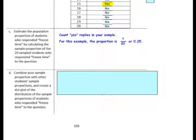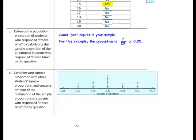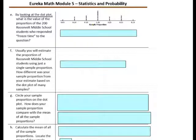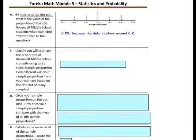Combine your sample proportion with other students' sample proportions and create a dot plot of the distribution. The number line goes in increments of 5 hundredths, and the data ranges from 0 to 0.35, with nobody at zero. By looking at the dot plot, estimate the proportion of 200 Roosevelt Middle School students who responded freeze time. We estimate 0.20 because the data clusters around 0.20.